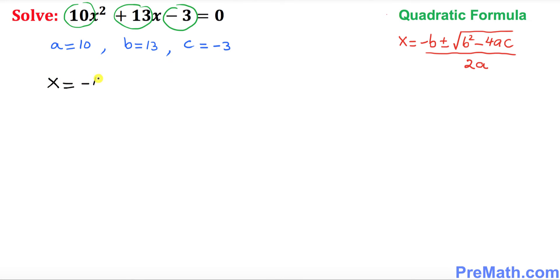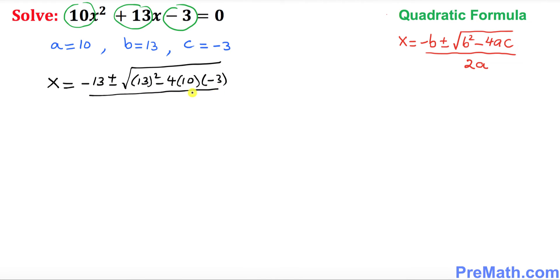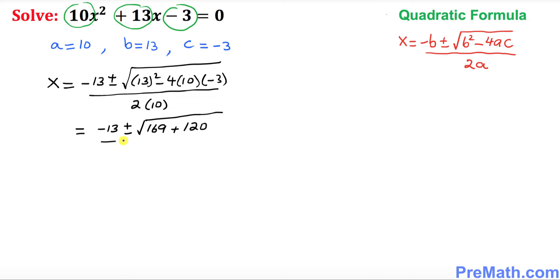This is going to become x equals negative b, which is 13, plus or minus b squared — that's 13 squared — minus 4 times a (which is 10) times c (which is negative 3), everything divided by 2 times 10. So next, we have negative 13 plus or minus: 13 squared is 169, and that gives us plus 120, divided by 20.